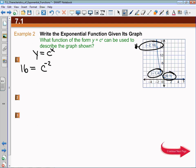I could also say that 4 is equal to c to the power of negative 1, and that's my second point. And then the third one would be that 1 is equal to c to the power of 0.